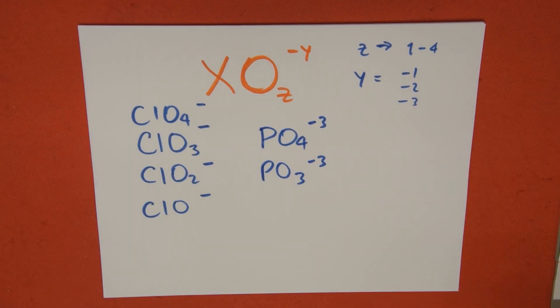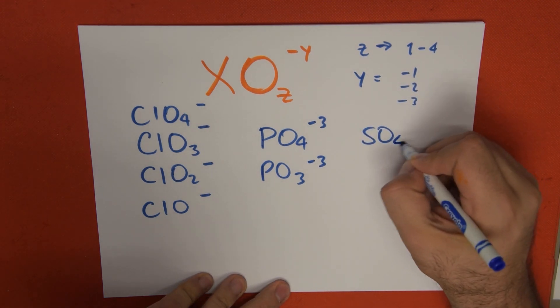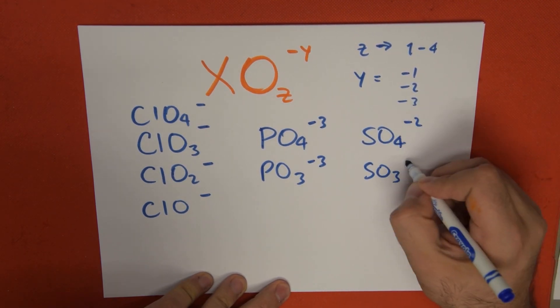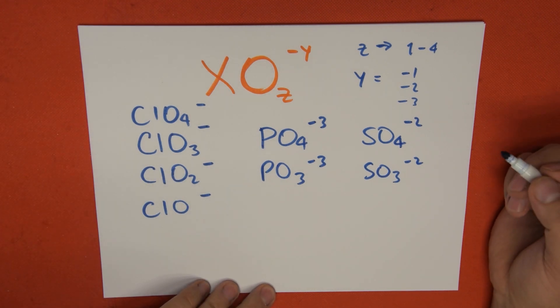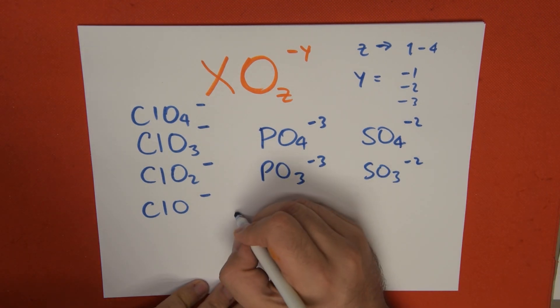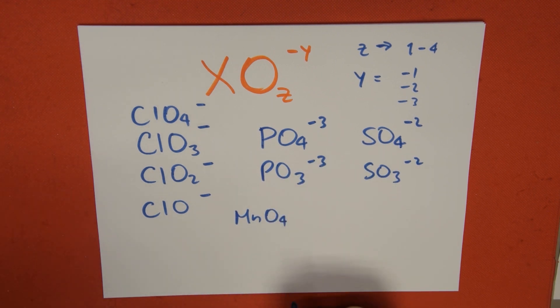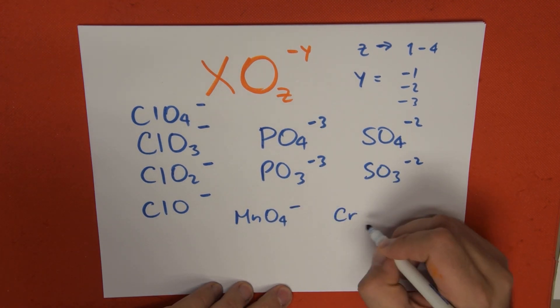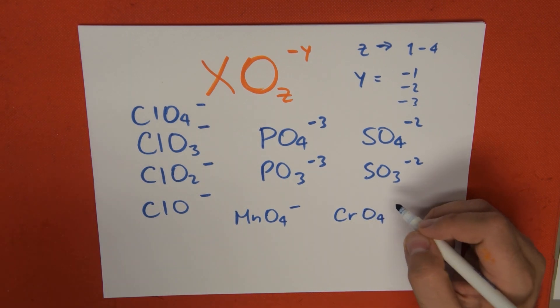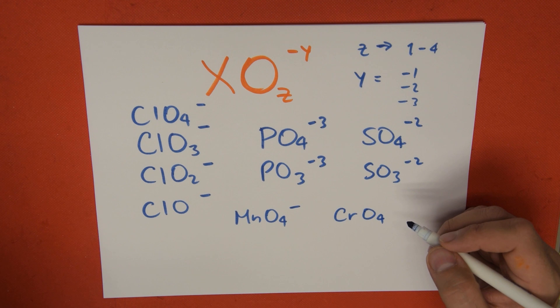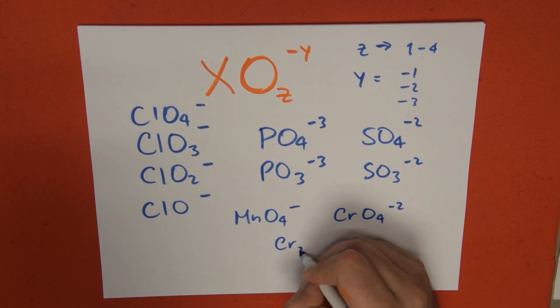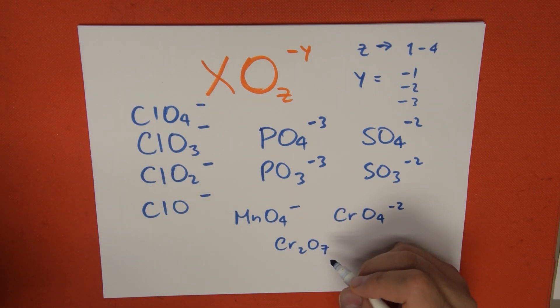Again, I consulted that from a chart. We can also have sulfur, SO4, SO3, with a minus 2 charge. We can also have metallic oxyanions, such as MnO4, which is called permanganate. Permanganate has an oxidation of negative 1. We can also have chromate, CrO4, with a minus 2 charge. And we also have dichromate, Cr2O7, which is minus 2.